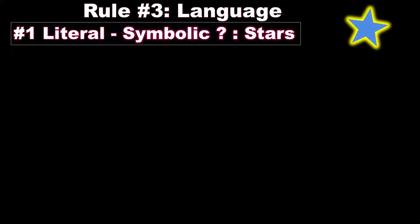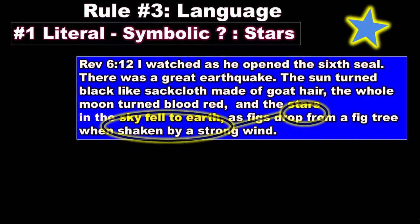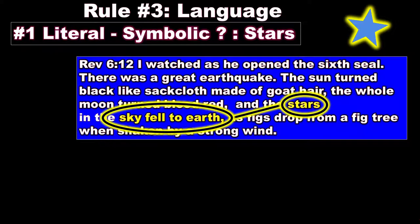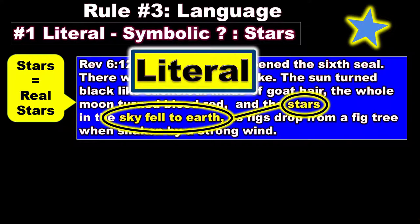Let's consider the word star in this text: 'I watched as he opened the sixth seal and there was a great earthquake. The sun turned black with sackcloth made of goat hair, and the whole moon turned blood red, and the stars in the sky fell to the earth as figs drop from a fig tree when shaken by a strong wind.' Stars in the sky fell to the earth — stars equal, in this text, real stars, because that's a very probable thing. Stars from the sky falling — this is literal.